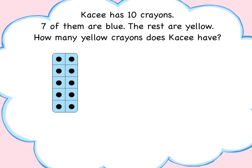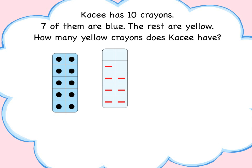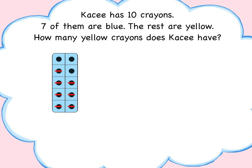Let's model all the crayons with dot tiles, then show the part we know with a dash tile. To find the missing addend, slide the dash tile over the total. Children can see that three dots are left, so Casey has three yellow crayons.